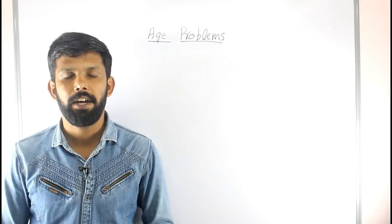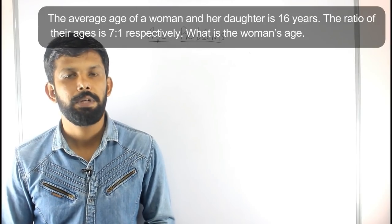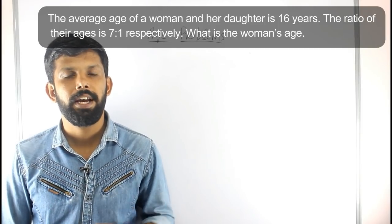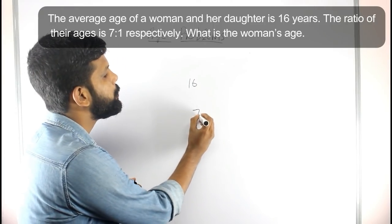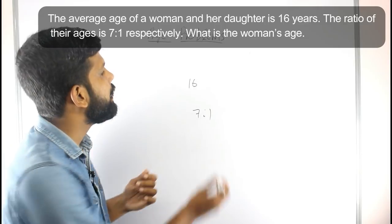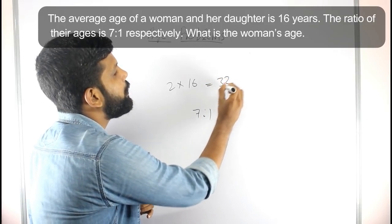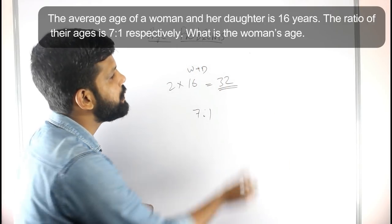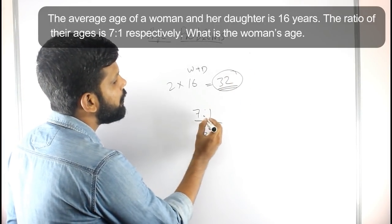The next question: The average age of a woman and her daughter is 16 years, and the ratio of their ages is 7 is to 1 respectively. Their total age is 2 times 16, which equals 32. The ratio is 7 is to 1, giving 8 units total. So 32 divided by 8 means 1 unit equals 4.